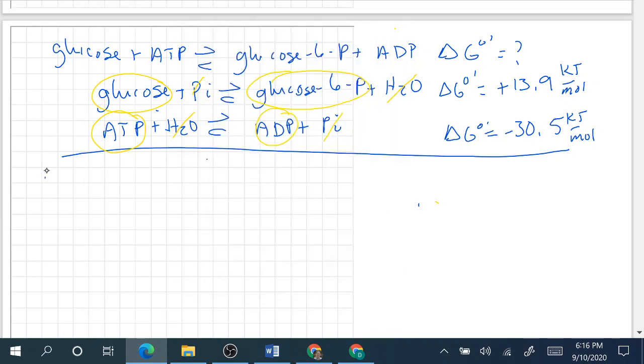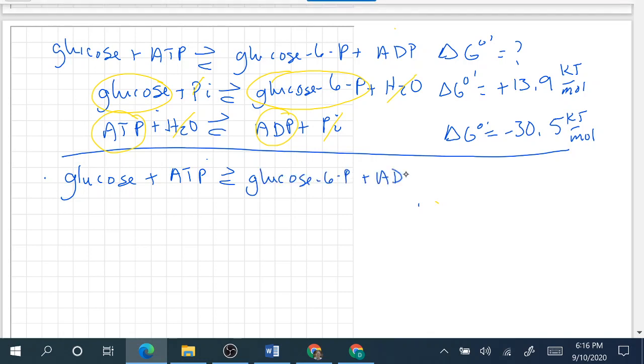That gives us our overall reaction that we had at the top: glucose plus ATP yields glucose 6-phosphate plus ADP. That's the trick to finding the answer to this problem. The delta G naught prime is equal to the total of these two delta G's, which is going to be 13.9 minus 30.5.